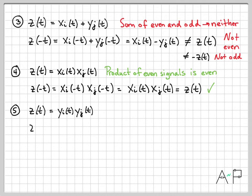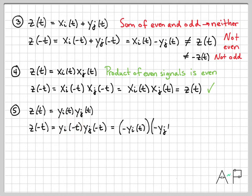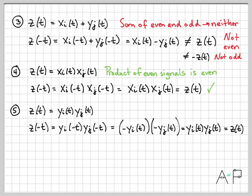Property five: a product of odd signals. z(-t) = yi(-t) · yj(-t). Since yi is odd, yi(-t) = -yi(t), and since yj is odd, yj(-t) = -yj(t). A negative times a negative is positive, so we get yi(t) · yj(t) = z(t). So z(t) = z(-t) — this is an even signal. A product of odd signals actually gives an even signal, which is the only surprising one on this list.